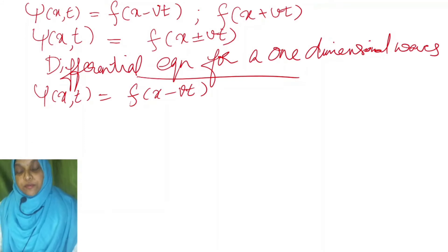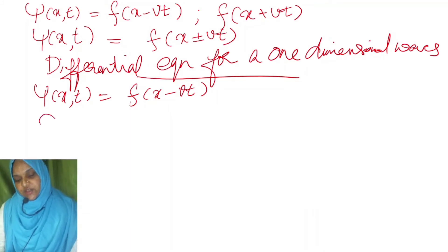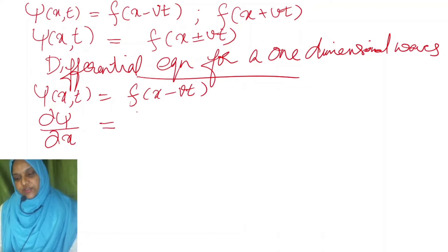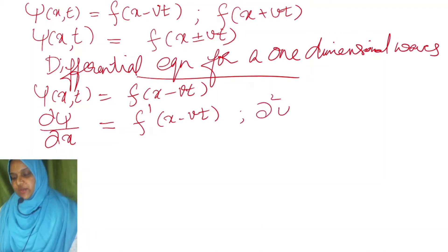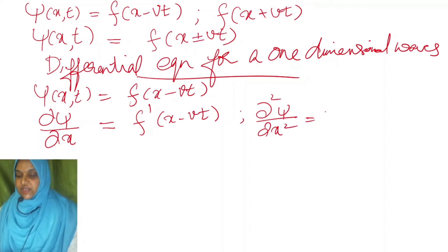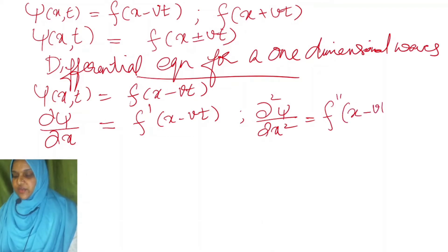We cannot take the full differential; we have to take the partial derivative. First, we take the partial derivative of ψ with respect to x: ∂ψ/∂x = f′(x − vt). Now we take the second derivative: ∂²ψ/∂x² = f″(x − vt). Here we use the symbol ∂ (partial) because we are taking the partial derivative. We cannot use dψ/dx because ψ is a function of two variables — position as well as time.